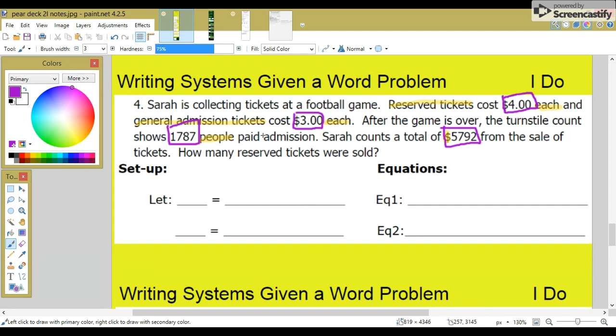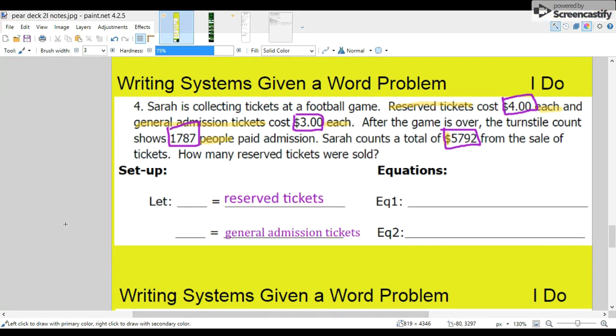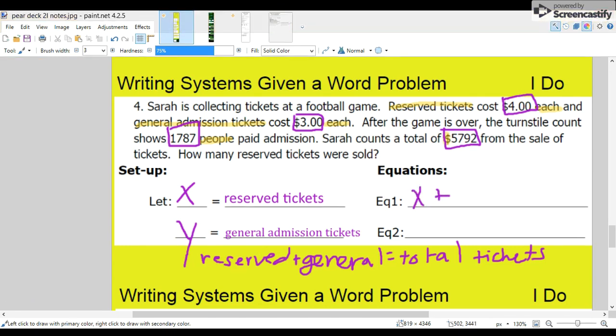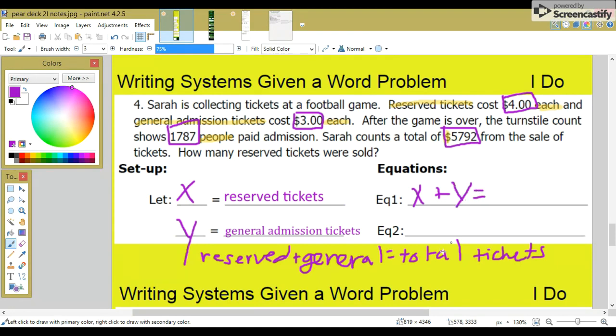So, we're going to set up our equations with two variables. We're talking about different kinds of tickets here. We have reserved and we have general. Let's let X equal the number of reserve tickets. And Y equal the number of general admission tickets. If we add all the tickets together, you'll have 1,787. So, the reserved would be X plus Y, the total number of general, equals the total tickets sold, which was 1,787.